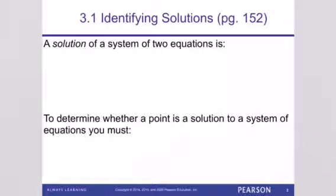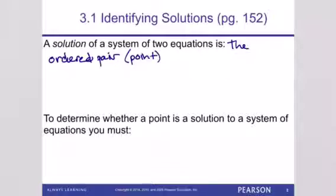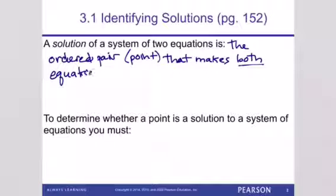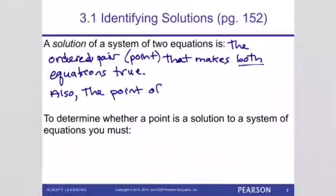So identifying solutions. A solution of a system of equations is the ordered pair, which we also know on a graph, an ordered pair is a point, that makes both equations true. Also, this will be the point of intersection on the graphs.